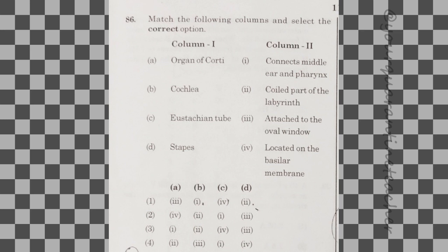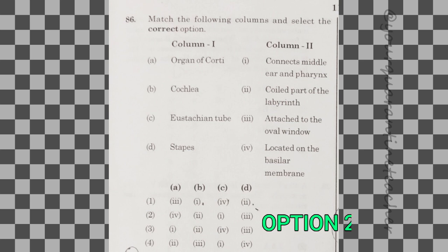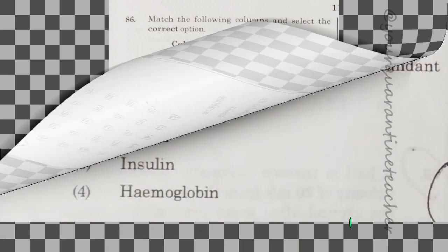86th question: match the following. The organ of Corti is located on the basilar membrane. The answer is option 2.